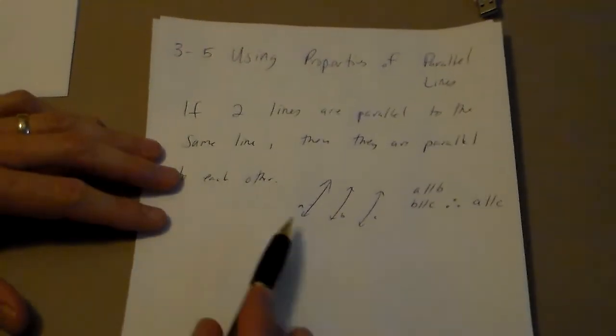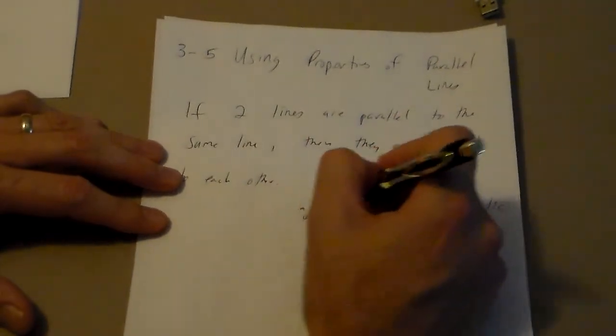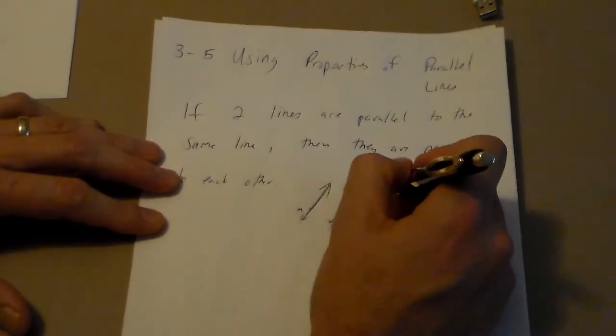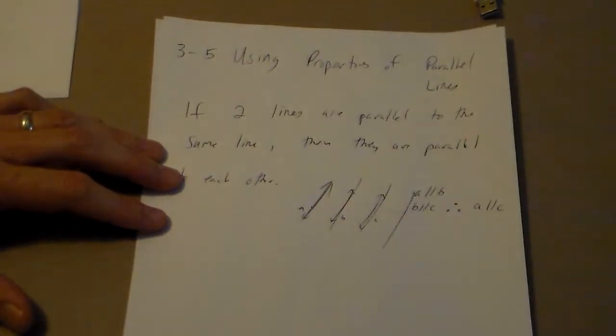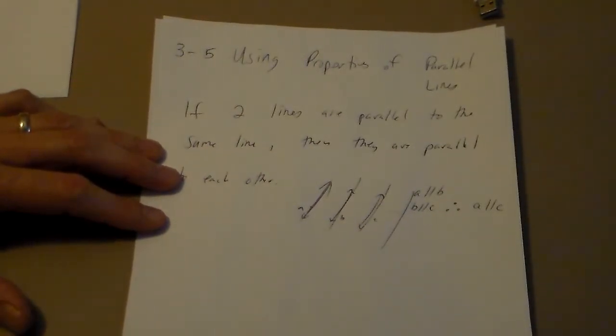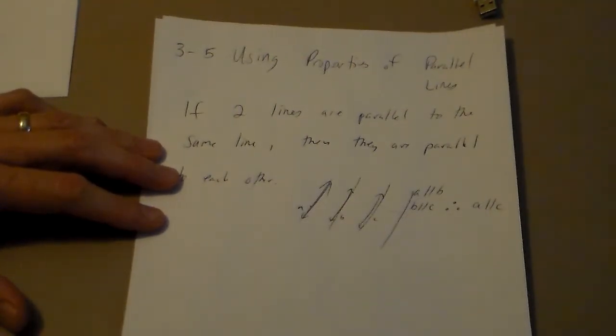Now, I want you to think of an example where we have parallel lines like that. A real-life example where we have one line, and it's parallel to this line, and it's parallel to this line. I want you to think of some real-life objects or things where this comes into play. Think about that for a second. I'm going to give you some.